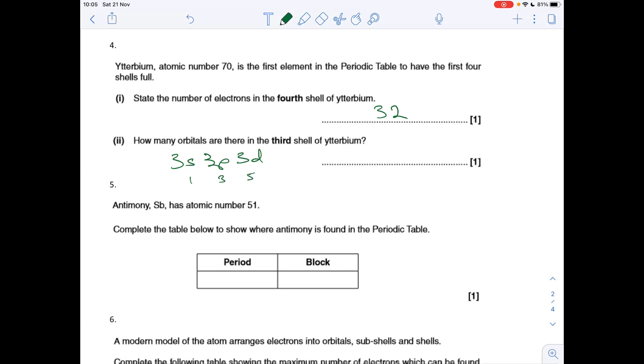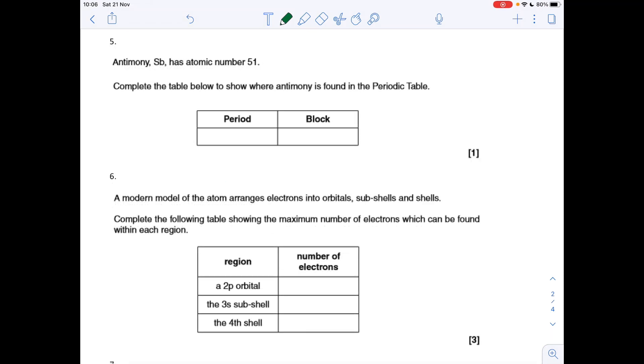Question five is about antimony, atomic number 51. You've got to find where it is in the periodic table, and you'll see it's in period five and it's in the p block.